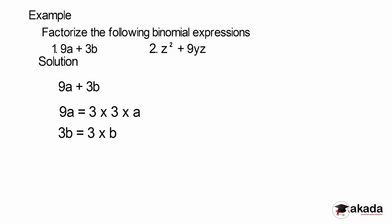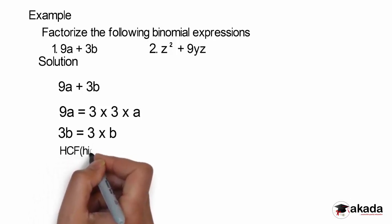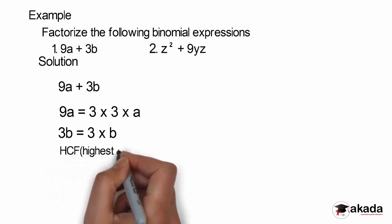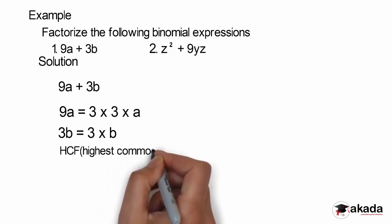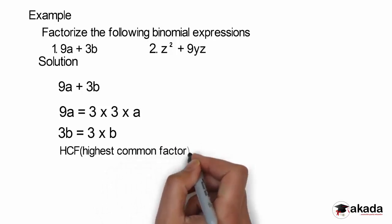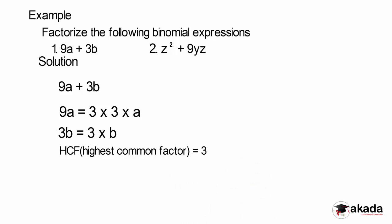We need to find the highest common factor, which we also did in our junior classes. You can check JSS1 and JSS2 to revise. Our highest common factor here is 3. You can see 3 is common to both factors. From 9a plus 3b, I have 3 out, which is the common factor.